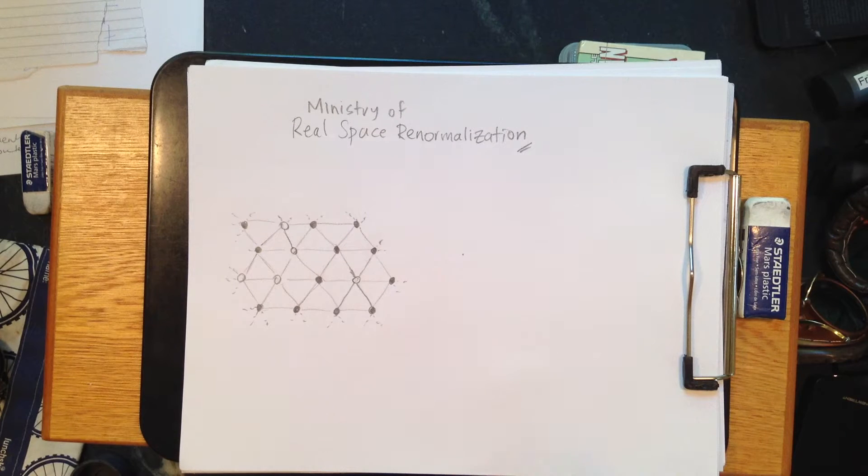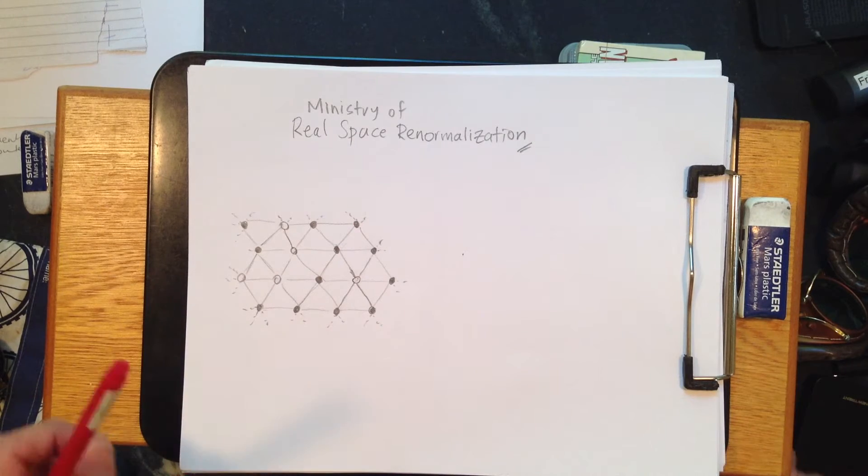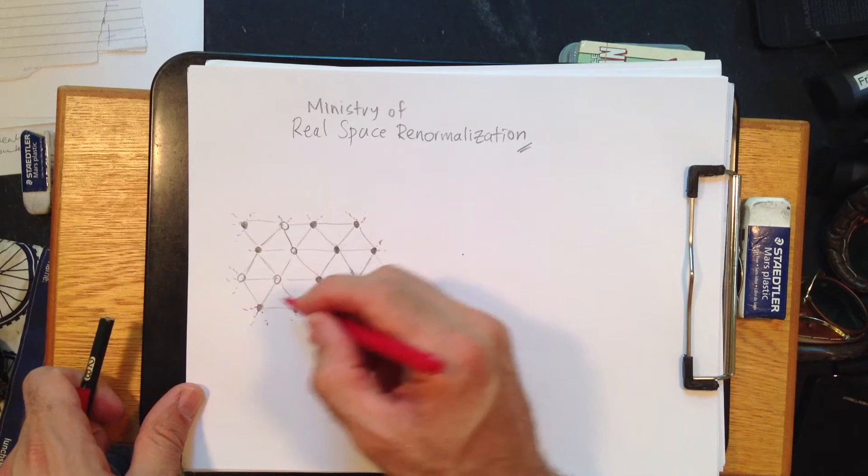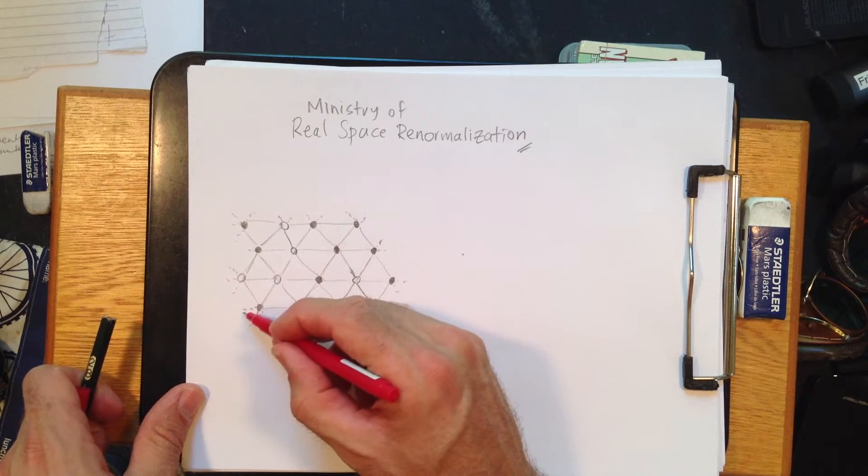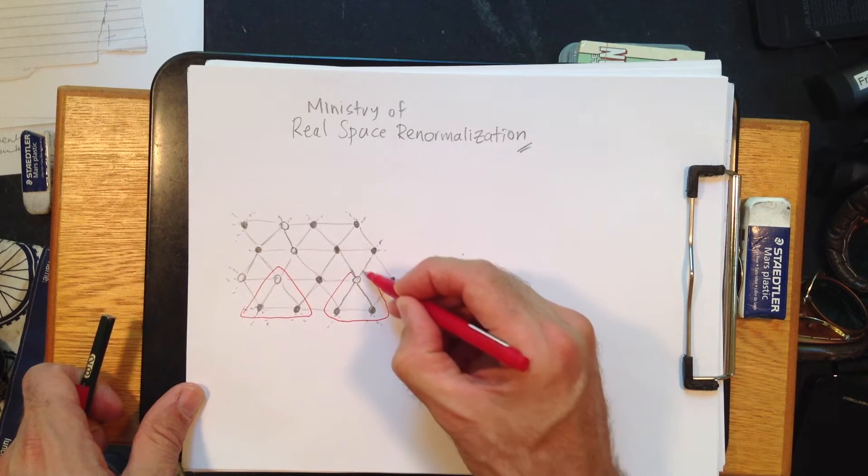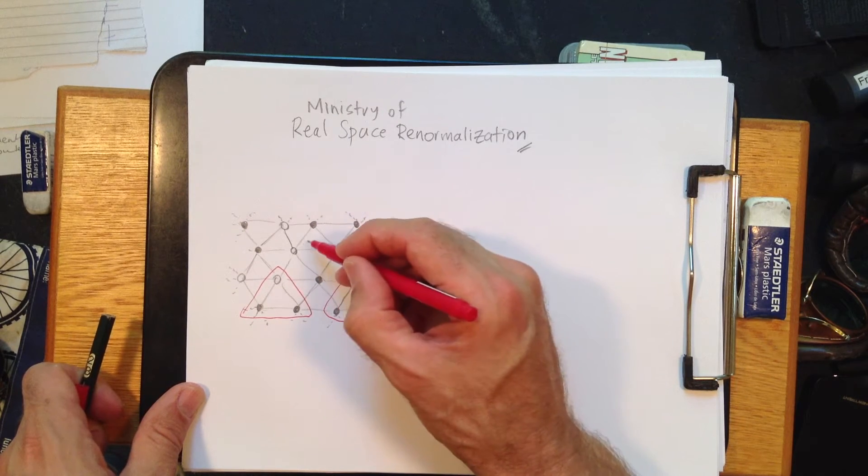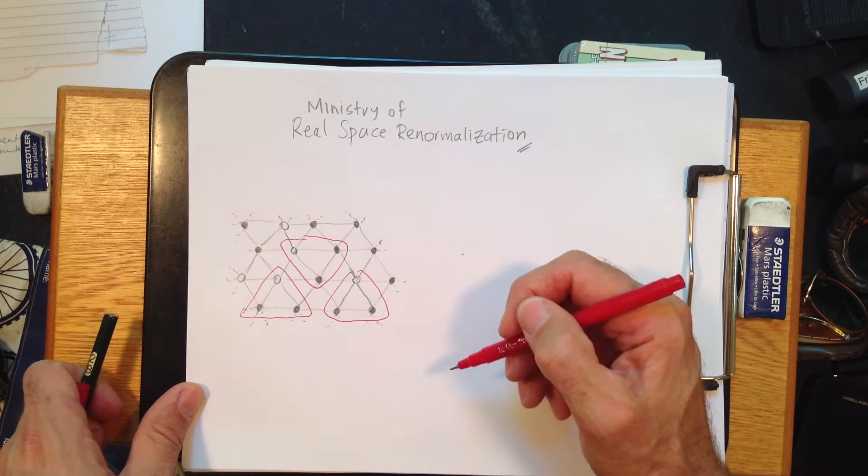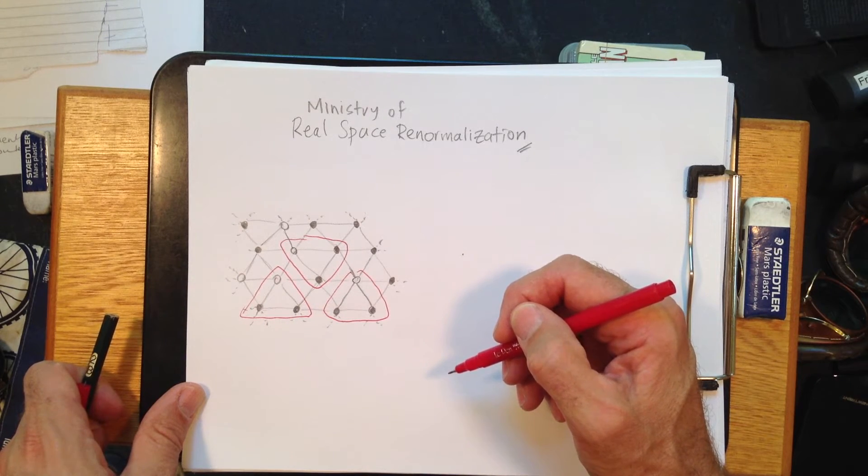Alright, so we're going to do something really naughty and sneaky, which works sometimes. This is from the Ministry of Real Space Renormalization, which is a shadowy group promoting a particular kind of physics technique. Alright, so what we do is we'll take blocks like this, and we'll think about the problem again in this way. Okay, so it's this one, and so on, right? I'm happy about this.